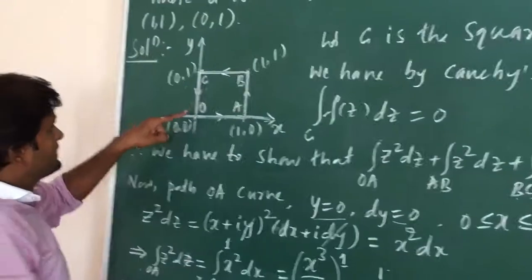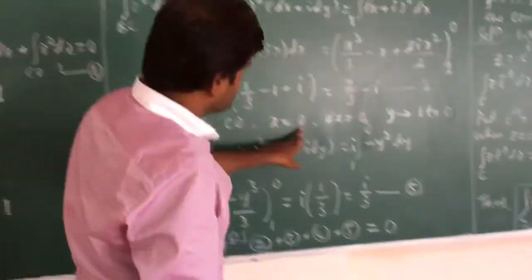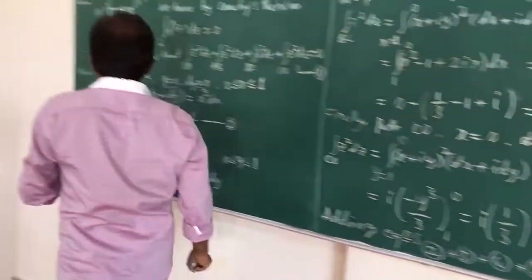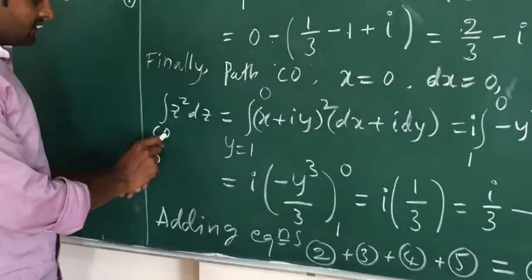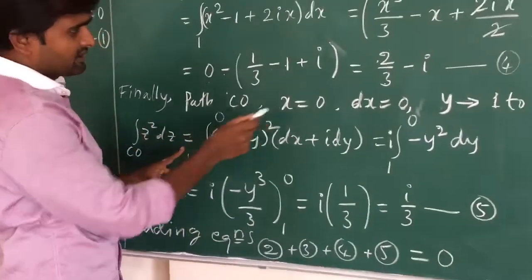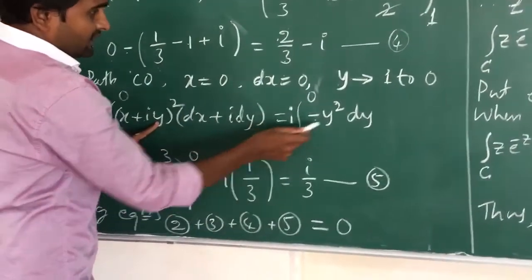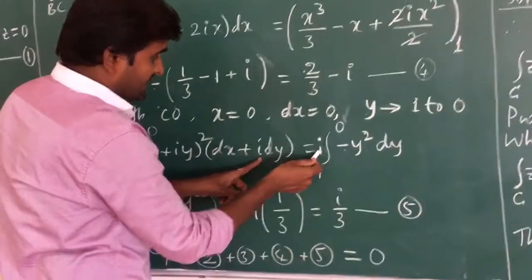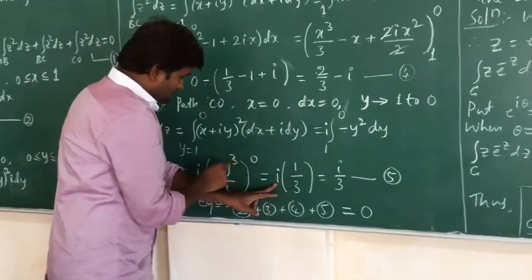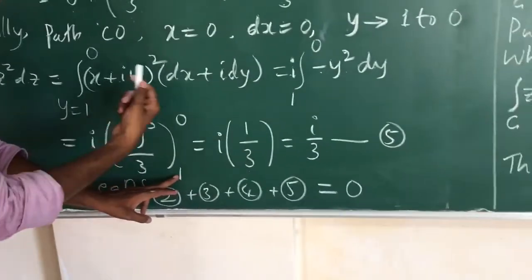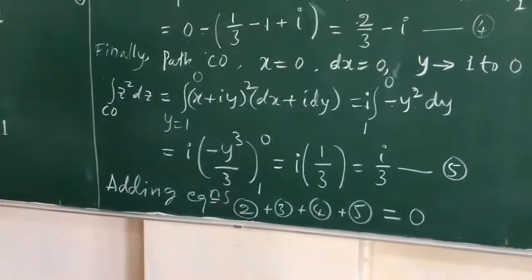Finally, path CO. This is perpendicular to the x-axis with x = 0, so dx = 0. y goes from 1 to 0. With x = 0, z² = (iy)² = -y². So the integral becomes ∫(1 to 0) -y² · i dy = -i · [y³/3] from 1 to 0 = i/3. Equation number 5.